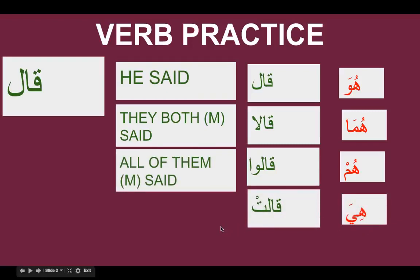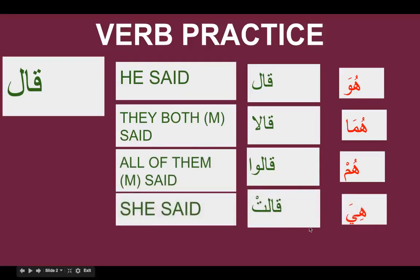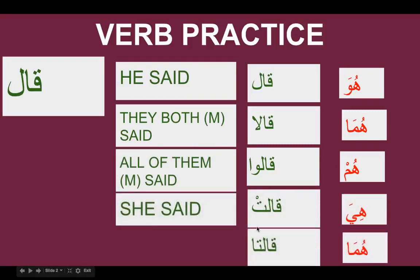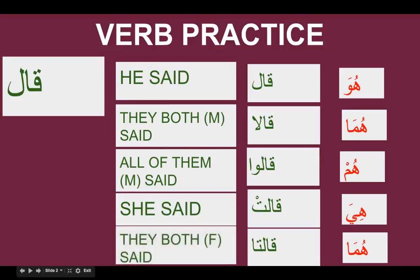Hiya qalat means 'she said.' Huma qalata — they both females said. From hunna, as we know, hunna acts in a very different way; things will change — inshAllah we are going to learn that in Book 2, which is very soon, just one chapter away. So to practice: huma qala, hum qaloo, hiya qalat she said, huma qalata.